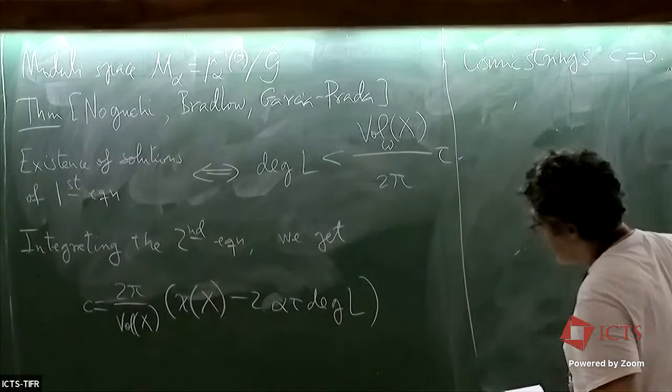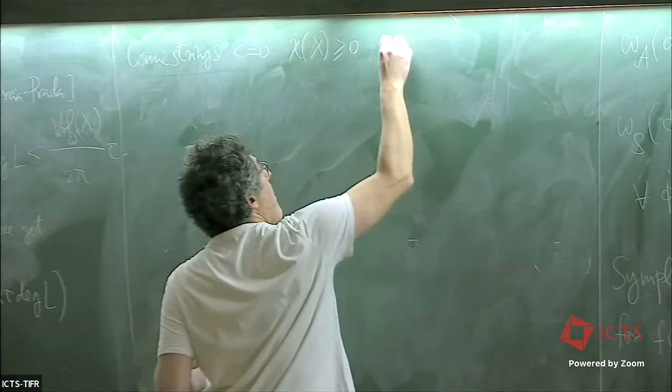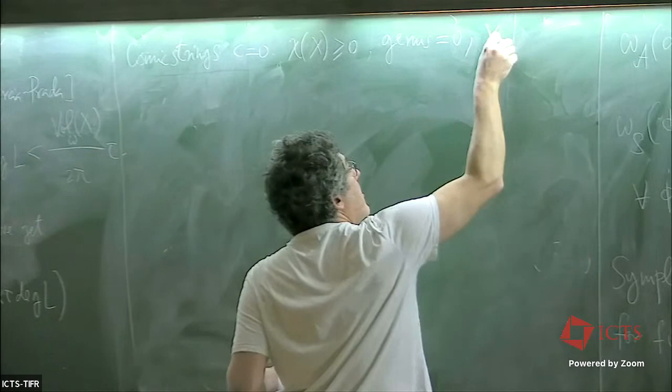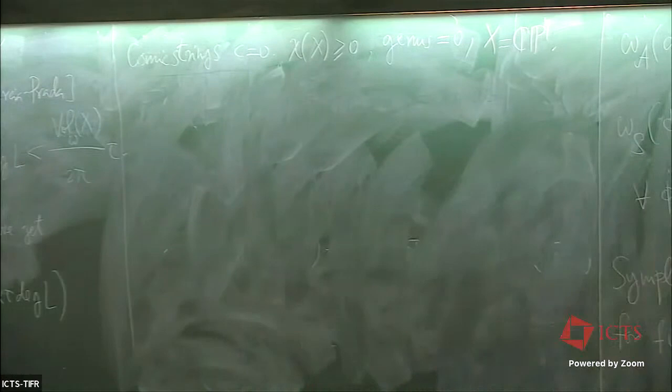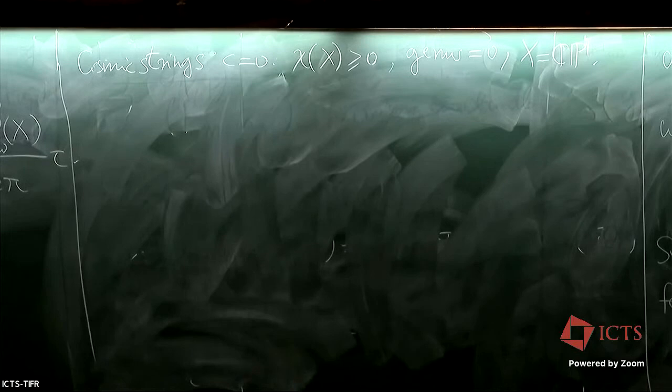So, integrating the second equation, and applying some formulas for this other one, but it's very easy. So, let's see, we get a topological obstruction. Okay. So Yang observed, he was interested in the case of cosmic strings.